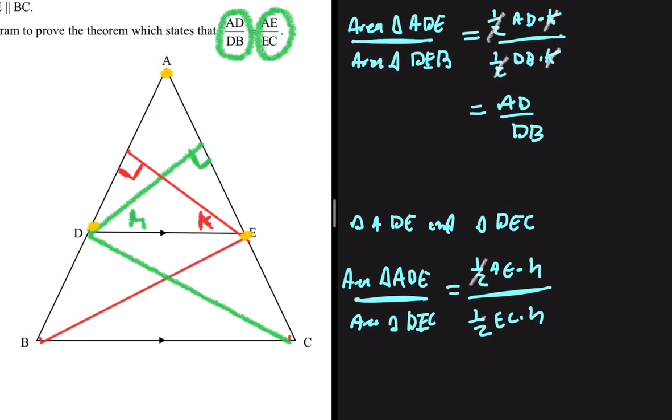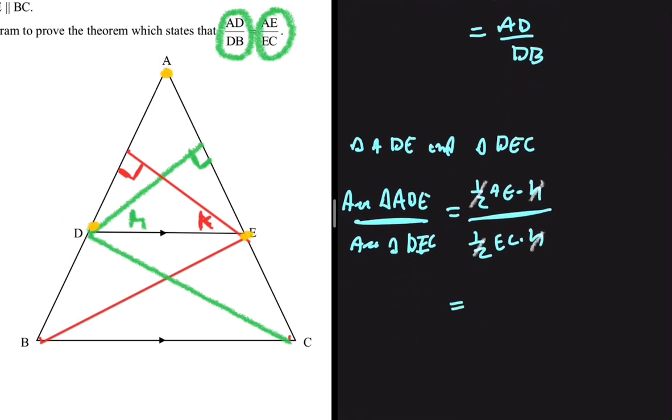And then as you would expect, a half and a half cancels out, H and H cancels out. So now we have AE divided by EC.